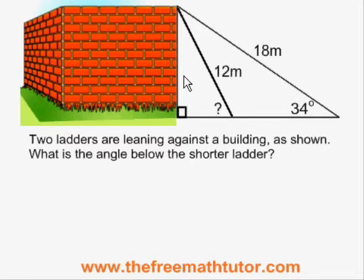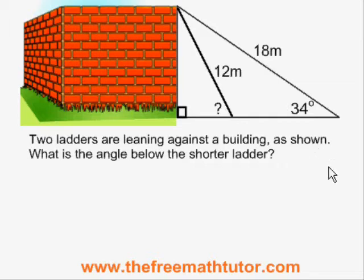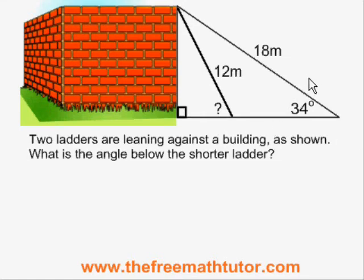But we also have a bigger right triangle formed by the larger ladder, and that gives us a 34 degree angle and this 18 meter hypotenuse. What we can do is use the 34 degree angle and the 18 meter hypotenuse to find one of the other measures in the larger right triangle. We could find the bottom, but that's not going to help us. Or we could find this upright, which is shared by the two right triangles. So if we find the height of the building with the larger right triangle, then we have enough information to switch to the smaller right triangle and find our missing angle.